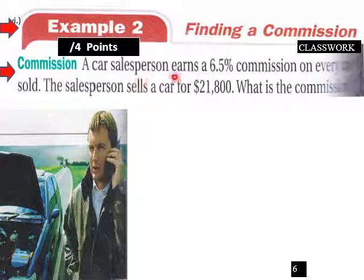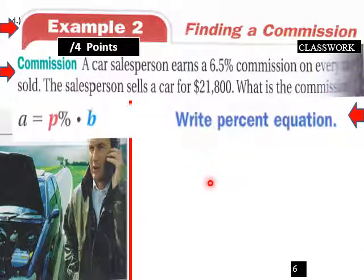Finding a commission. A car salesman earns 6.5 percent commission on every car sold. This salesman sells the car for $21,800. What is the commission for that sale? So A equals P percent times B.